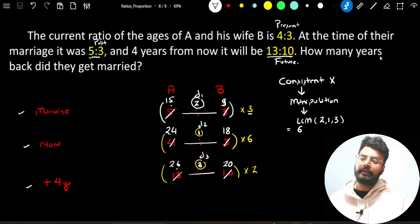Now, after writing the manipulated values of ages, if you check the differences now, the differences value is same. It is going to be 6 in each and every case. 15 and 9 difference is 6, 24 and 18 difference is again 6, 26 and 20 difference is 6. It means after performing this manipulation, I have made my system consistent. Making system consistent means now I have made these 3 ratios synchronized. So I can take one common variable x with all the 3 pairs of ratio.